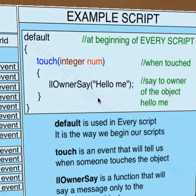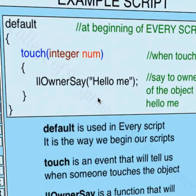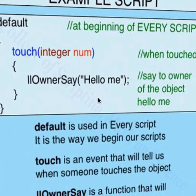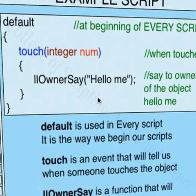Let's take a look at a basic example. In scripting, we make script sandwiches. Everything is contained within a sandwich. The default is like the top piece of bread, followed by an open bracket. At the very bottom of this script is a closed bracket, which is our bottom piece of bread.